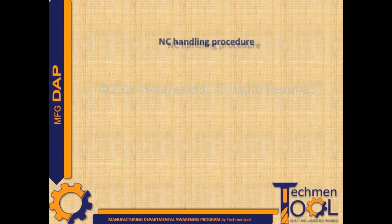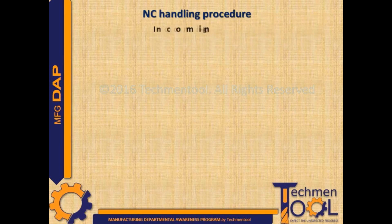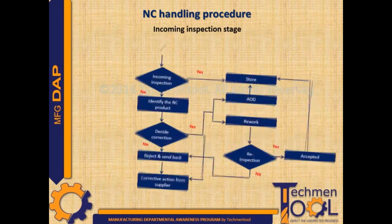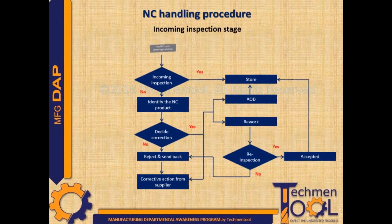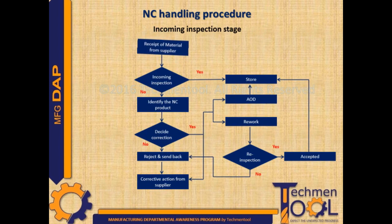This is the flow chart for NC handling at the incoming inspection stage. During the incoming inspection process, if any NC is identified, a decision is made whether to directly reject or proceed with in-house correction.